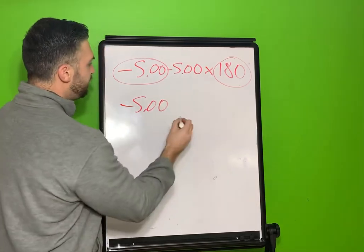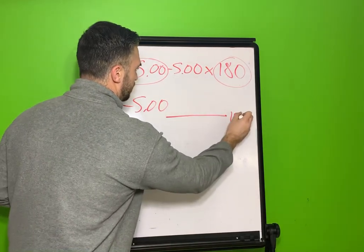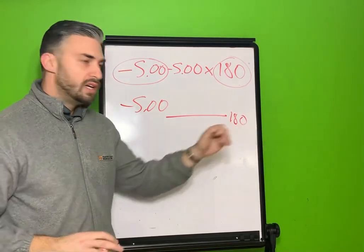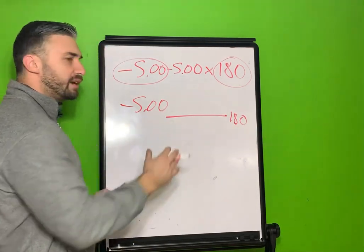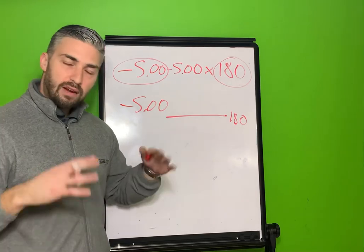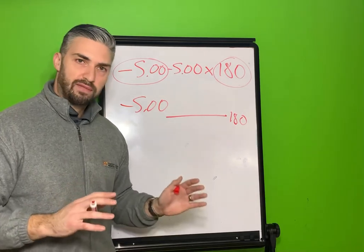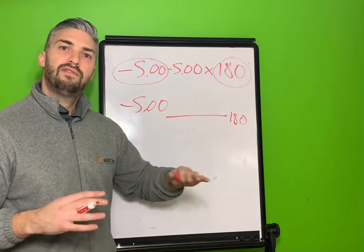So a negative 5 at 180, that's on the horizontal meridian. So we know that a negative 5, negative 4 is when you need to start compensating for vertex distance and you have to memorize that. But a negative 5, we just said that it just changes a quarter diopter.